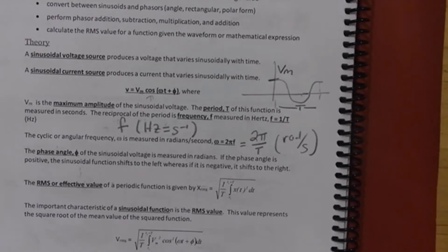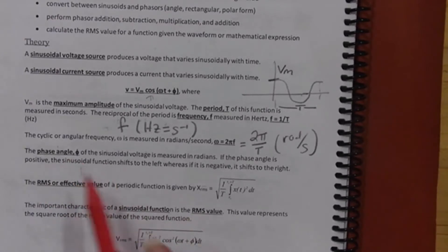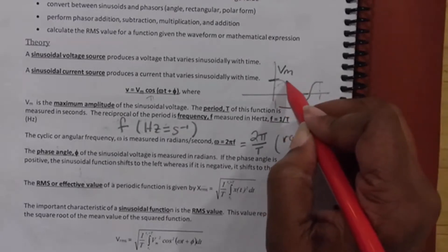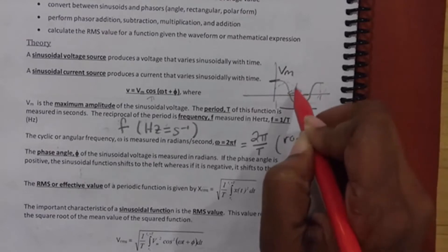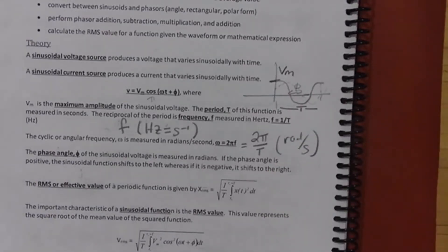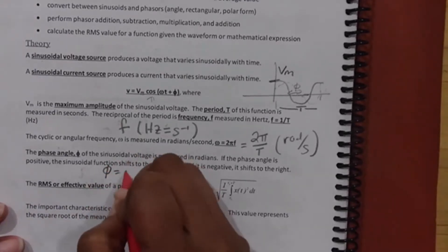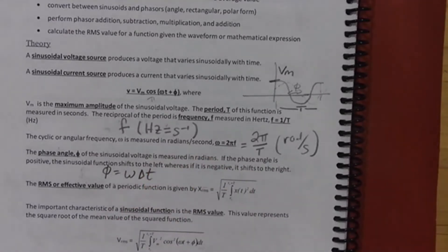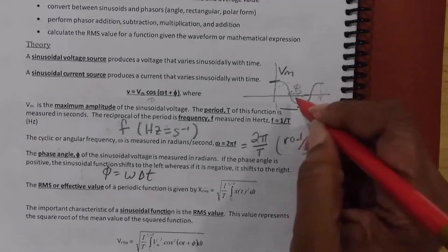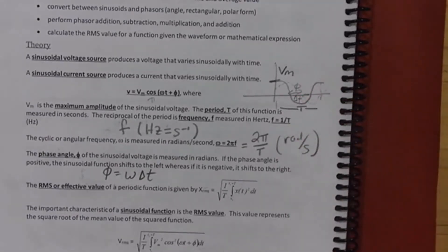The phase angle shows the difference between two signals. We talked about Eli the Iceman — voltage and current leading and lagging — two sinusoids have a difference represented as a phase angle. You can solve for that phase angle as φ = ω·Δt, where Δt is the time difference between where both signals cross the time axis. ω·Δt gives you that angle in radians.